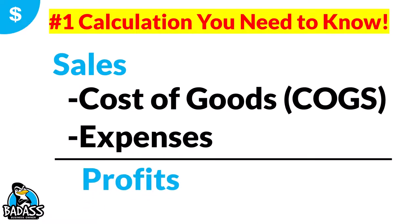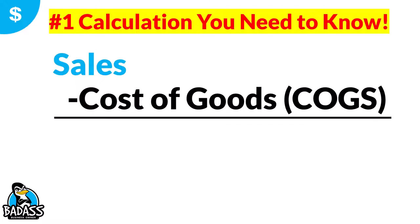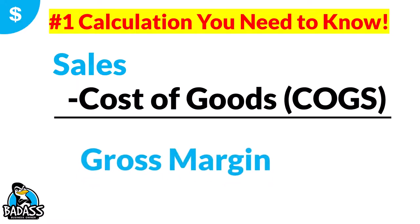As a business owner, you need to remember this one thing: sales minus your cost of goods equals your expenses, which leaves you the money for your profits. That's the most basic calculation to help you keep in mind the flow of money through your business. So when we're talking about gross margin, it's your sales minus your cost of goods — real simple.